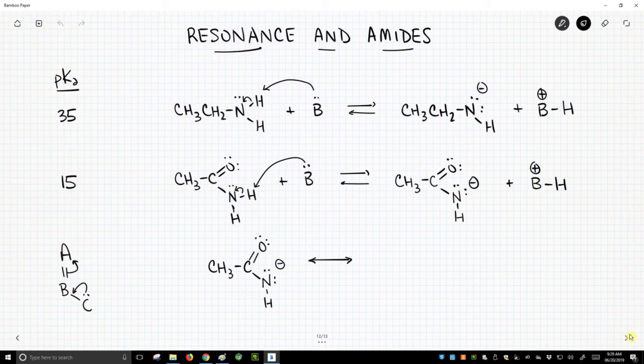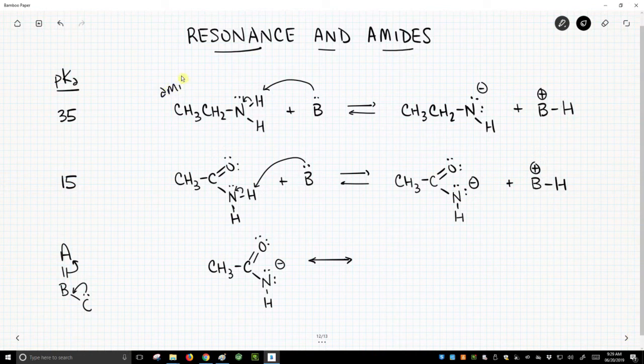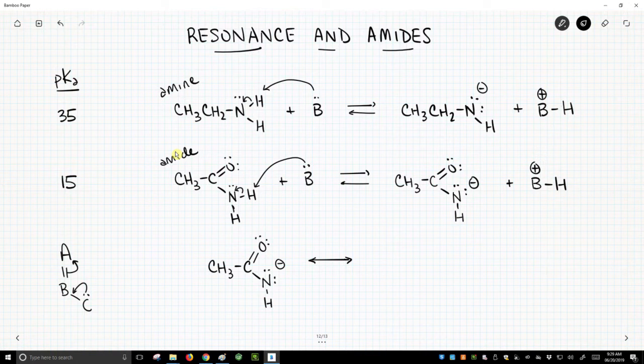We have two acid-base reactions on the screen. One involves this amine as a functional group, and the other involves deprotonation of an amide. In both cases, we use this generic B with a lone pair instead of water as our base, and we form our conjugate bases, as always.